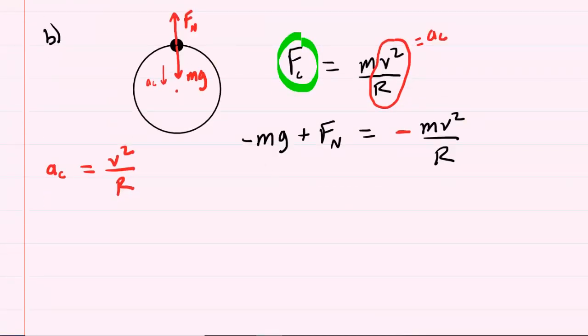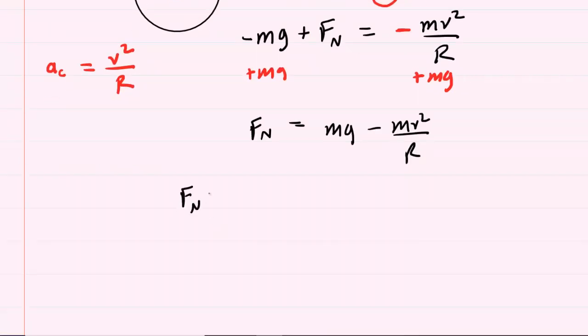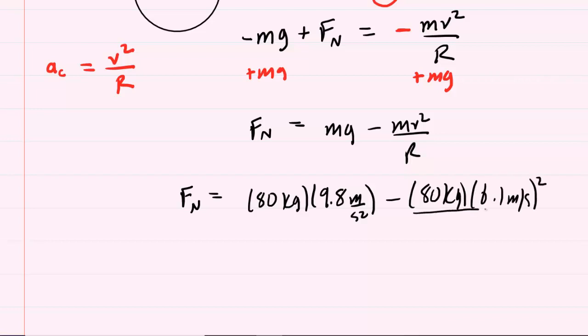Now we want to solve for the normal force, so let's go ahead and add mg to both sides of this equation. So now we have Fn is equal to mg minus mv squared over r. We can then just plug in the known values. The mass is 80 kilograms. G of course is 9.8 meters per second squared. We have the mass again. The speed was 6.1 meters per second. Don't forget to square it, and then don't forget to divide by the radius of 10 meters. When we punch this into our calculator, we're going to get approximately 486 newtons for that normal force.